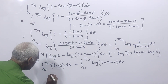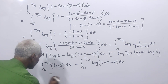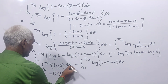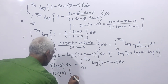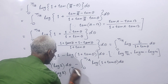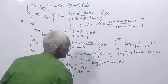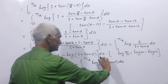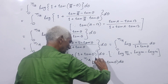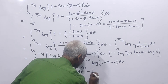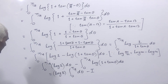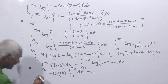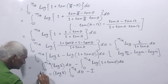Since log 2 is a constant, it comes outside the integral. So we have I = log 2 · integral from 0 to π/4 of dθ, minus the integral from 0 to π/4 of log(1 + tan θ) dθ. But this second integral is exactly the original I that we assumed. So, according to our assumption, this equals I = log 2 · ∫₀^(π/4) dθ − I.